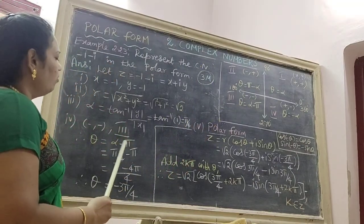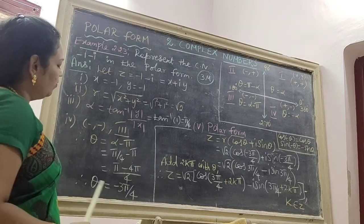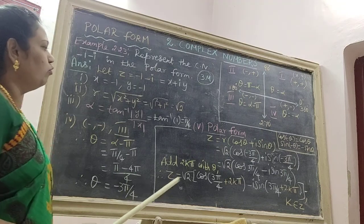Therefore, theta is equal to alpha minus pi. Substitute alpha pi by 4 minus pi. Simplifying, we get theta is equal to minus 3 pi by 4.